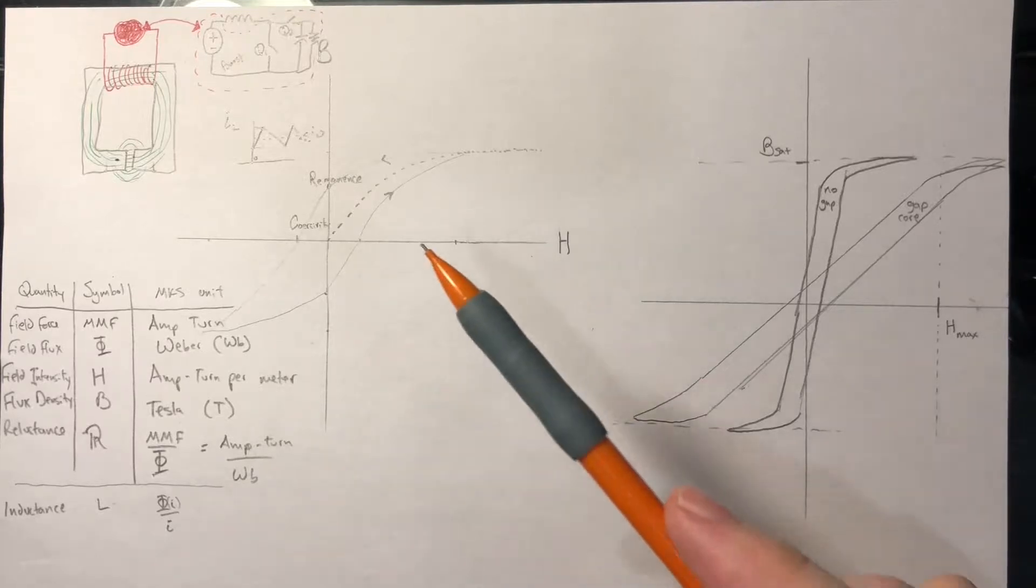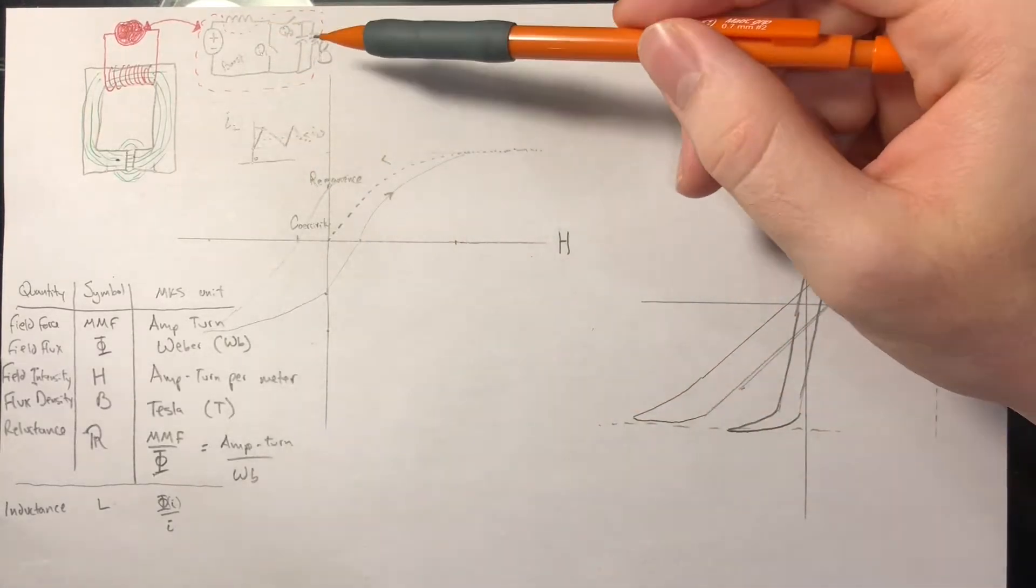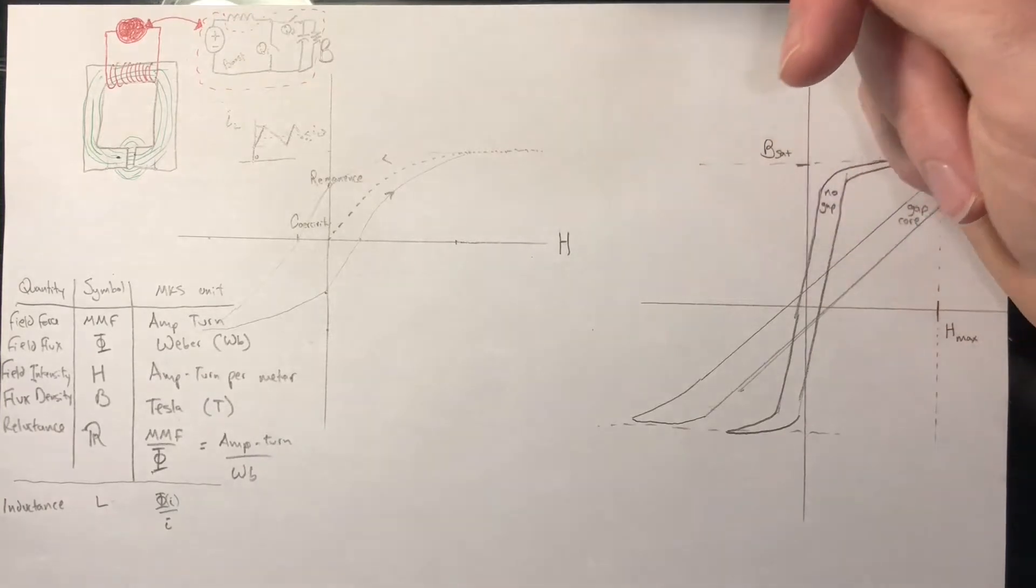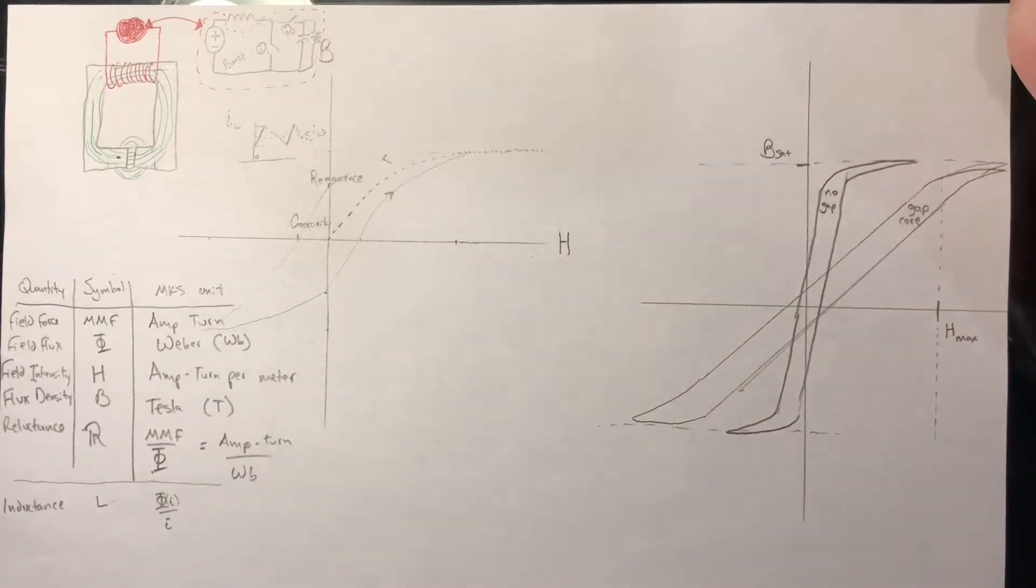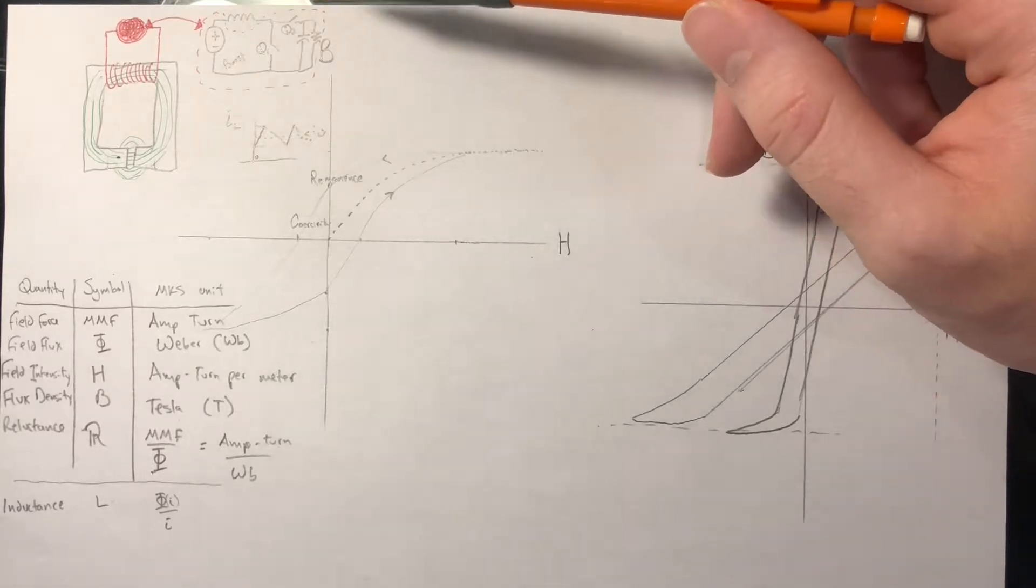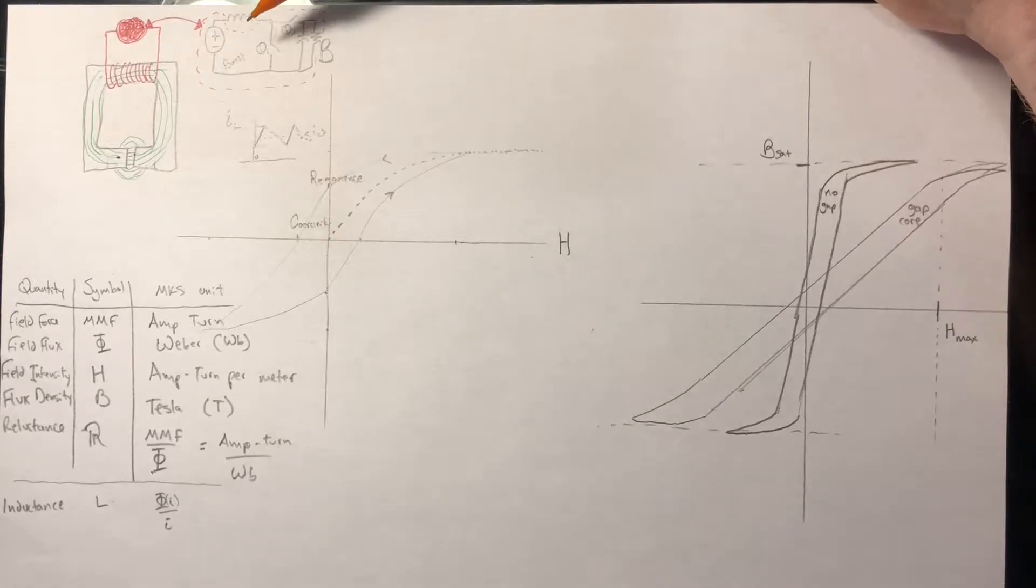So consider the case where we need to create an inductor for this boost converter. We know that in a nutshell the whole reason this DC-DC converter works is that when Q1 is closed and Q2 opens, current flows through the inductor and energy is stored. When Q2 is closed and Q1 opens, the energy from the inductor is transferred into the load.